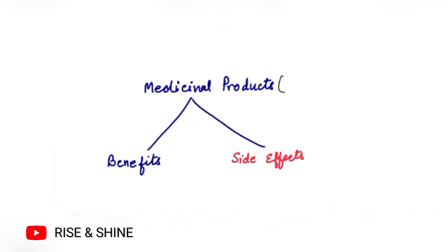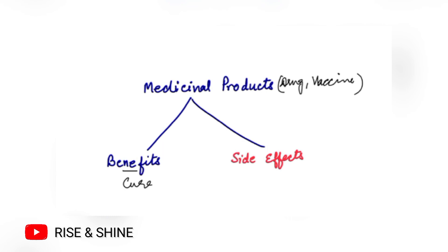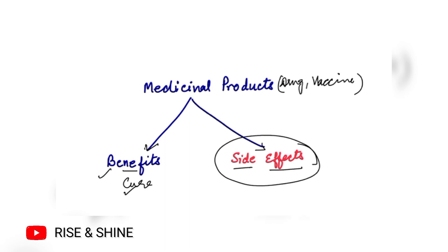Let's first understand what pharmacovigilance is. Any medicinal product — a drug, a vaccine, or anything — comes with two things. One is the benefit: it will cure, it will treat — those are your desirable effects. If you're taking a tablet for a headache, it will cure that headache. But along with that, some undesirable effects also come — those are known as side effects. If they are manageable, fine; if they are major, then actions are needed.